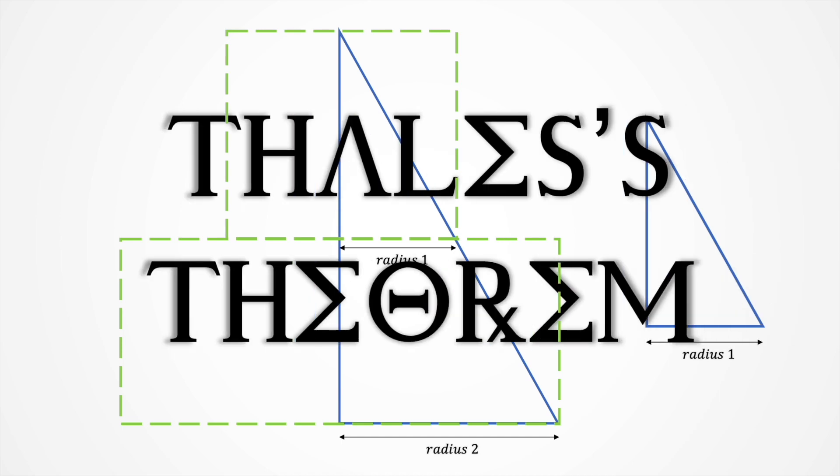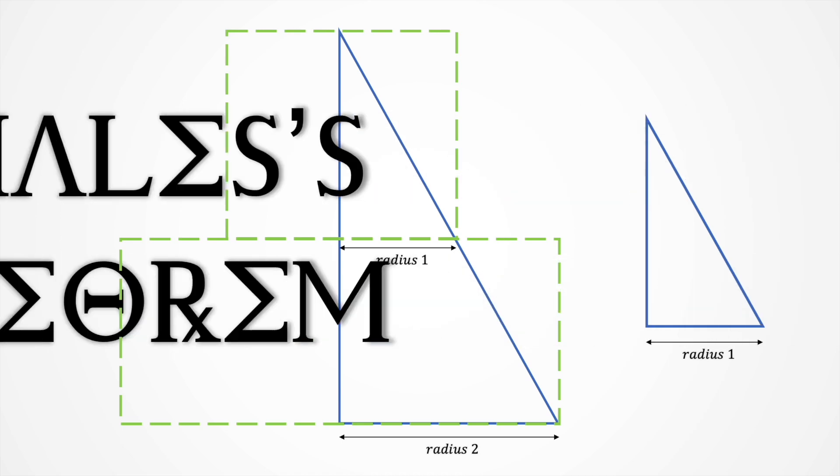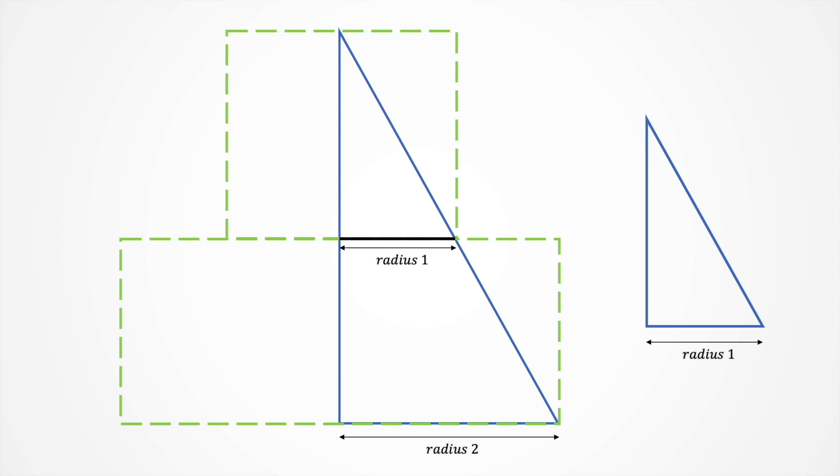Here is where the first Thales theorem takes part. It claims that when we cut a right triangle parallel to any of its sides, we obtain a similar right triangle. That is, our new triangle is proportional to the initial one.